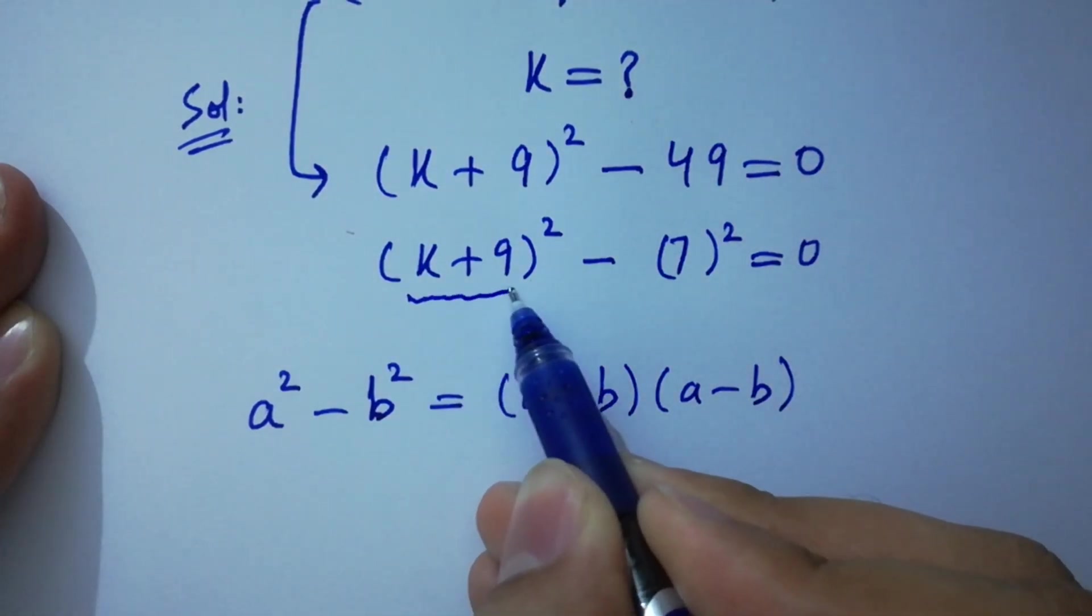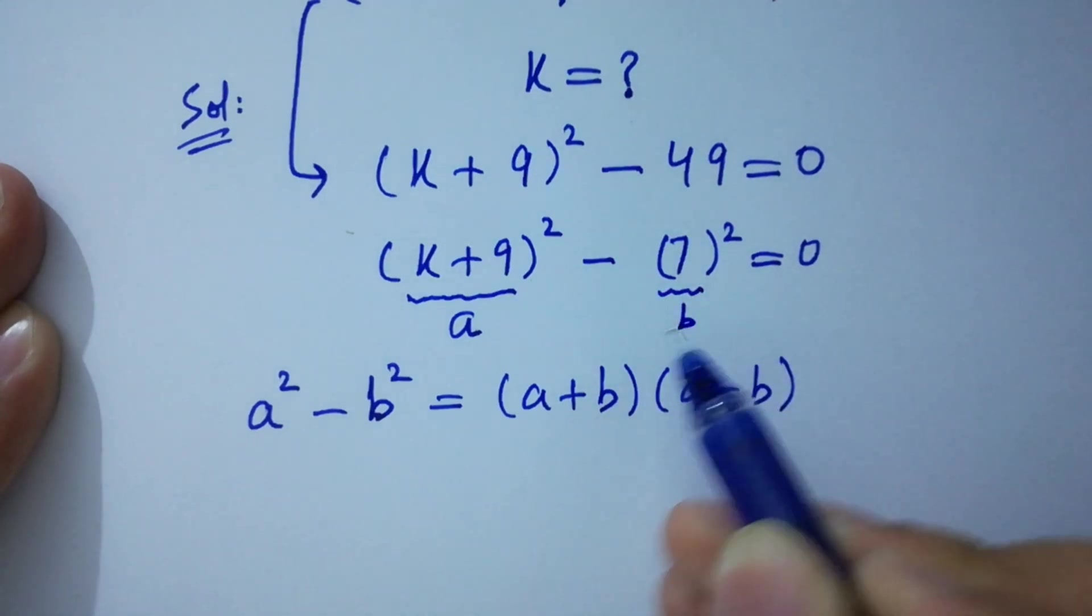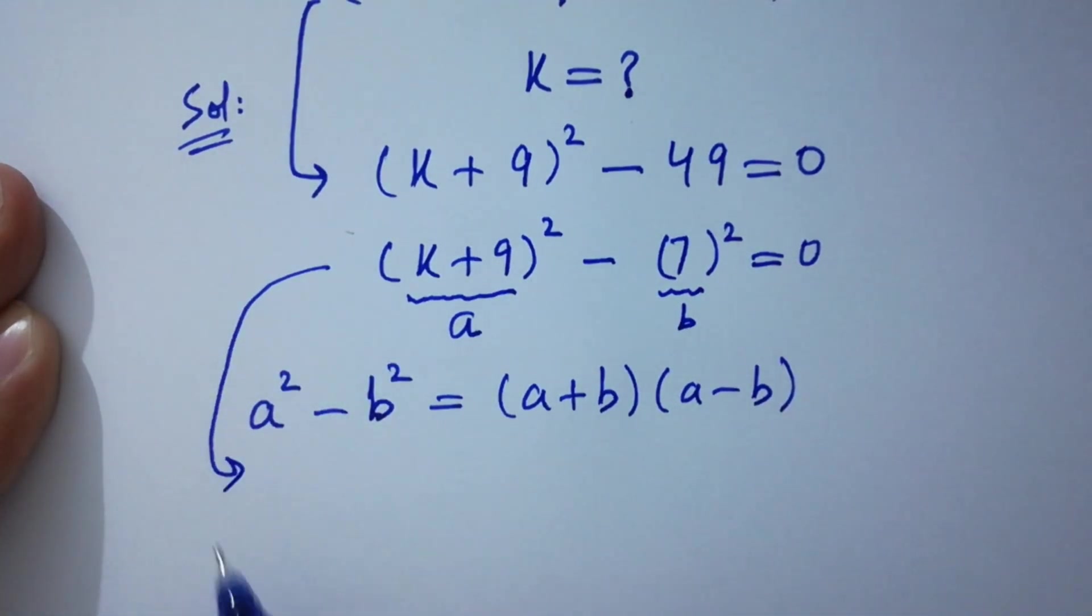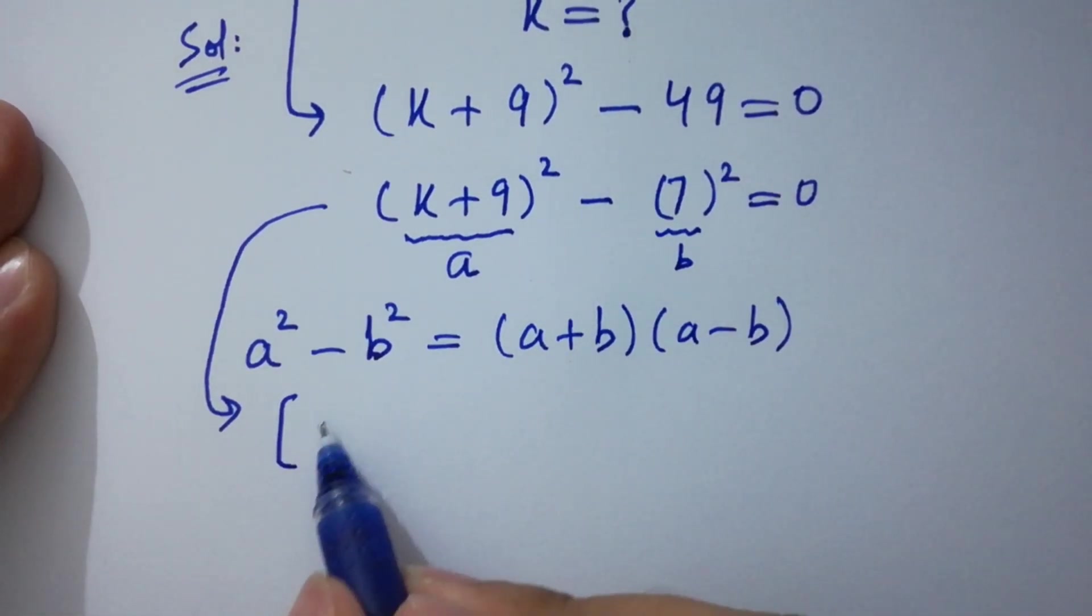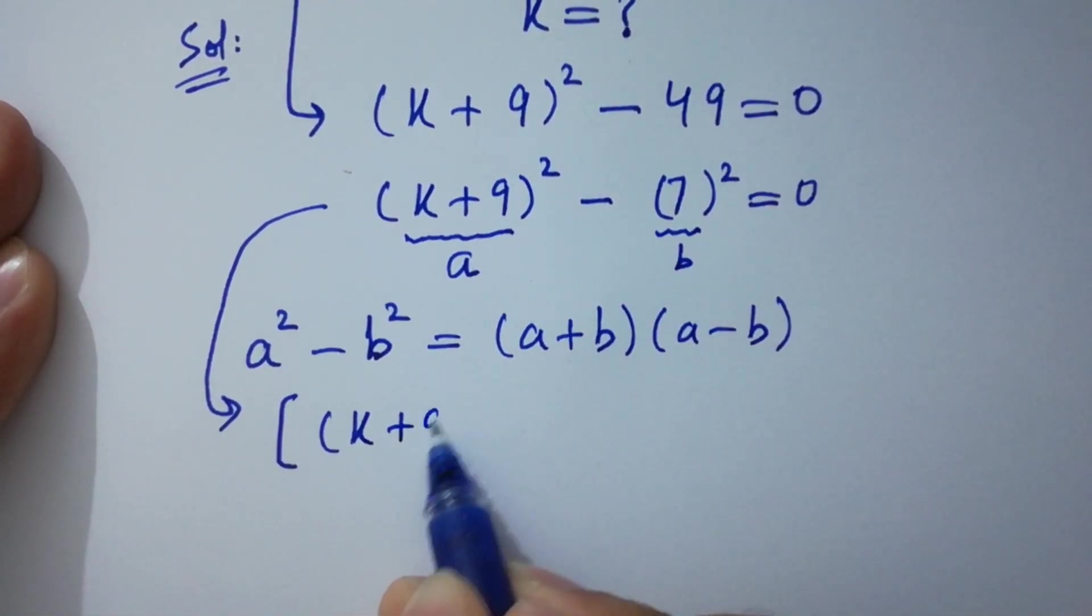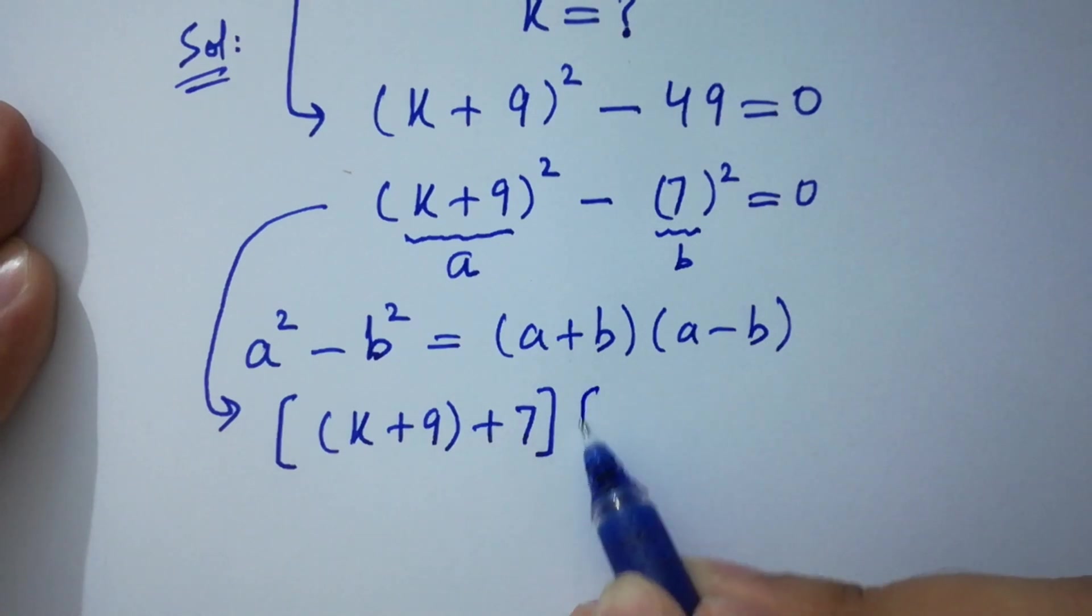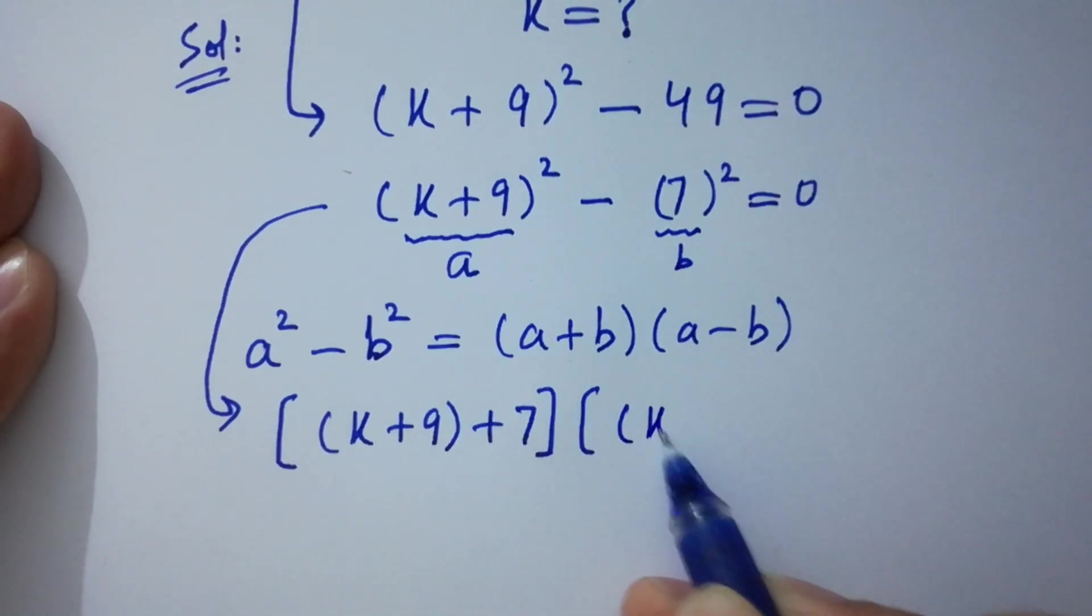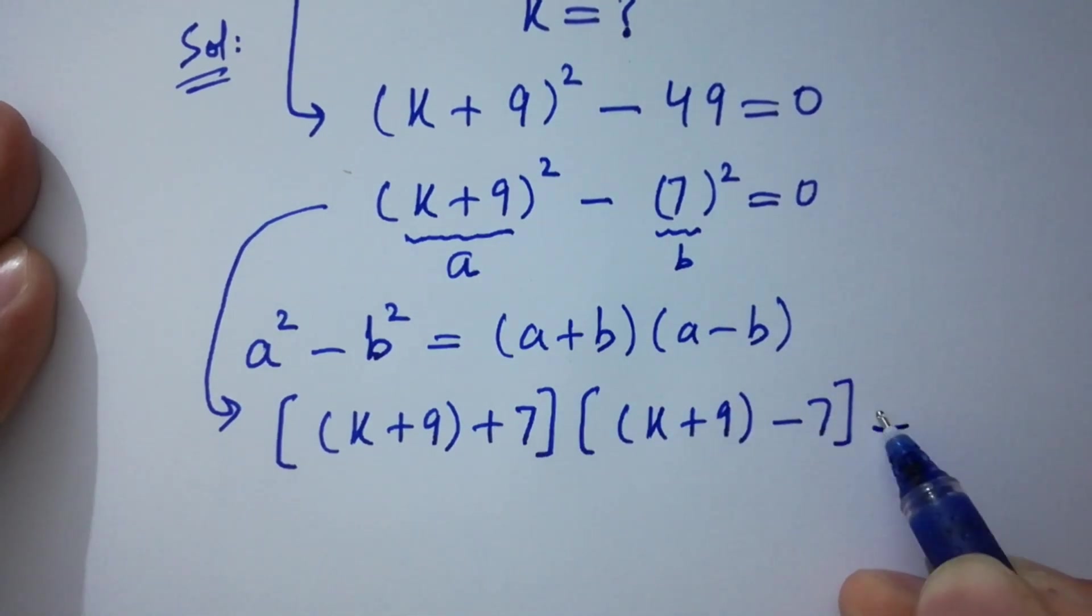You can see k + 9 is a and 7 is b. Apply this formula. Now we have here (k + 9 + 7)(k + 9 - 7) like (a + b)(a - b) equal to 0.